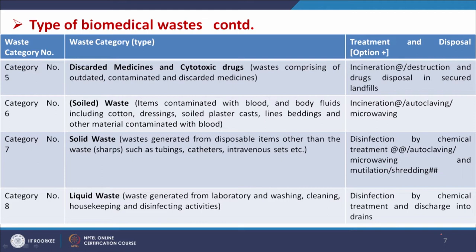Category five is discarded medicines and cytotoxic drugs — comprising outdated, contaminated, and discarded medicines — with incineration, destruction, and disposal in secured landfills as recommended routes. Category six is soiled waste, meaning items contaminated with blood and body fluids including cotton, dressings, soiled plaster casts, linens, beddings, and other blood-contaminated materials. Incineration, autoclaving, and microwaving are recommended disposal routes.